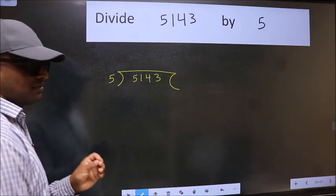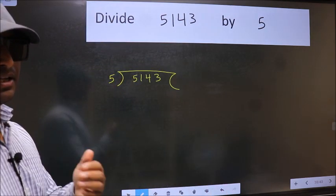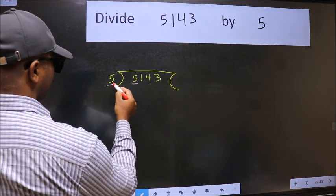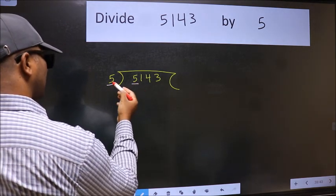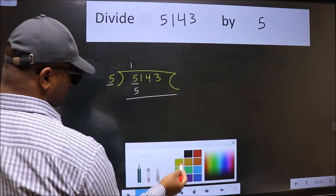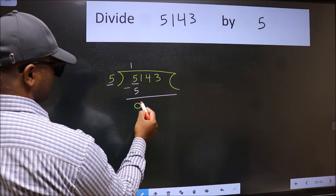This is your step 1. Next, here we have 5 and here 5. When do we get 5 in the 5 table? 5 once is 5. Now we should subtract. We get 0.